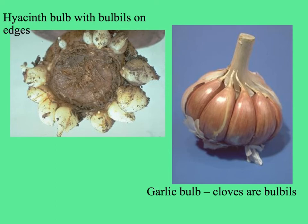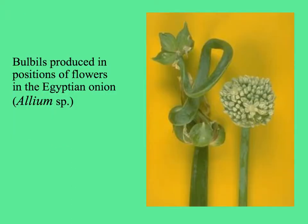To the left, we see a hyacinth bulb in the middle with roots coming off, while each of the little things around it are bulbils. In a garlic head, each of the cloves is a bulbil. Here's a picture of the Egyptian onion inflorescence with flowers, and sometimes after flowering, rather than producing seeds, they make bulbils in the inflorescence.